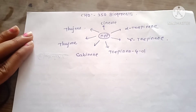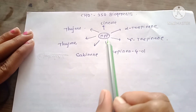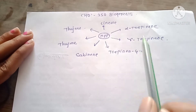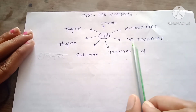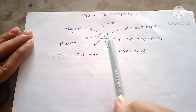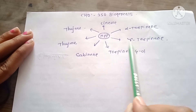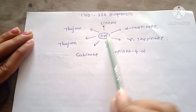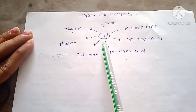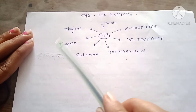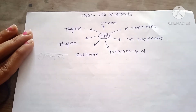Hello friends, today I will teach you the synthesis of sabinene from NPP, terpinen-4-ol from NPP, alpha terpinene from NPP, gamma terpinene from NPP, cineole from NPP, thujene from NPP, and thujone from NPP.